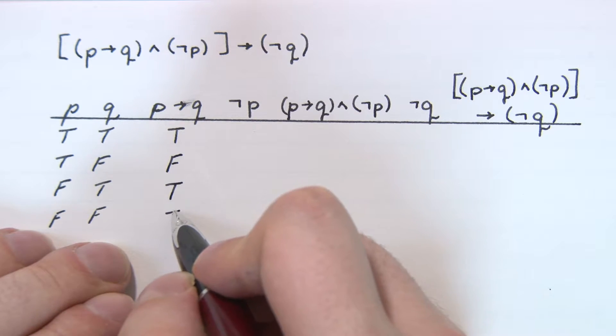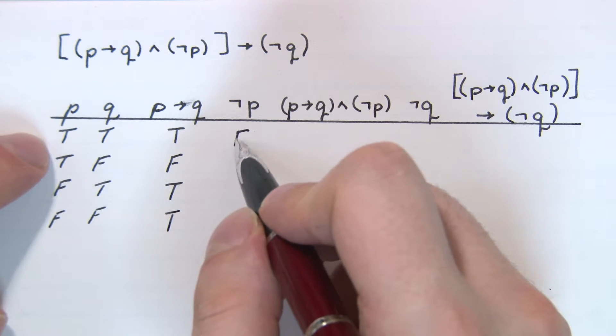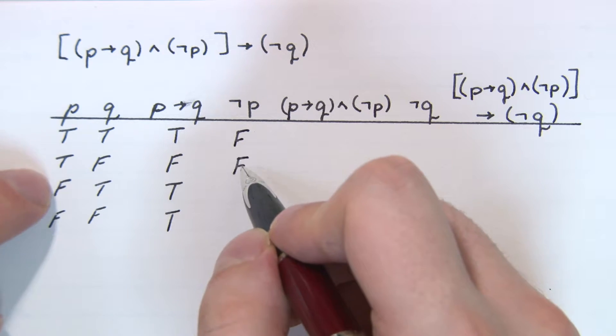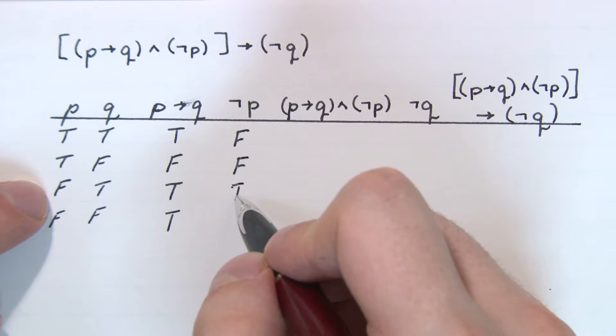And false implies false is true. The negation - we flip all the values in the P column, so we have, or sorry, false false, true true.